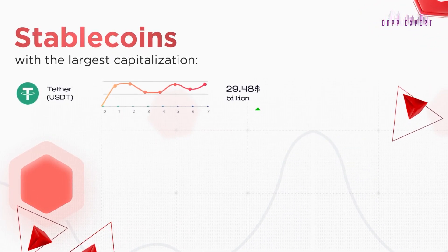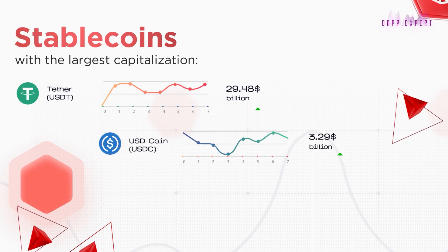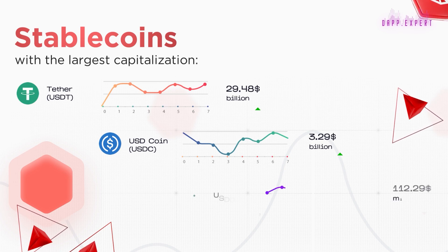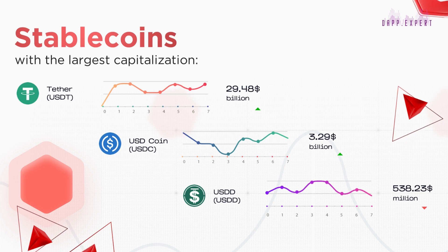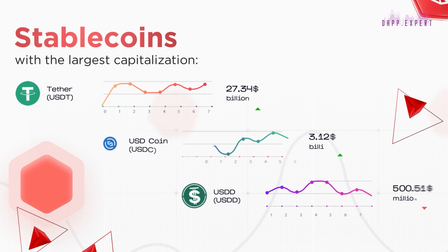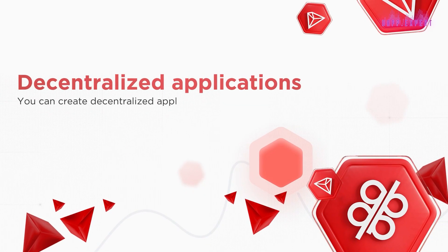In second place is USDC, with a capitalization of $3.29 billion. TUSD ranks in the top five stablecoins with $538.23 million. USDJ is a stablecoin developed by the Tron ecosystem itself.